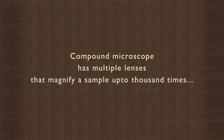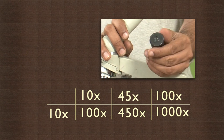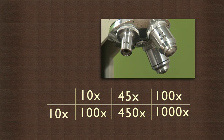So a compound microscope has multiple lenses that magnify a sample up to a thousand times. The 10x eyepiece in combination with the objectives of 10x, 45x, and 100x gives a total magnification of 100x, 450x, and 1000x, depending on the objective chosen.